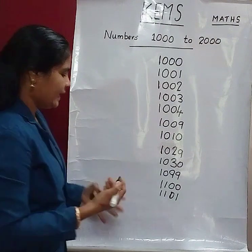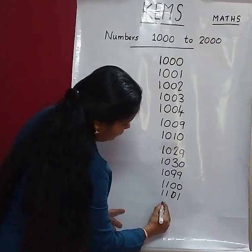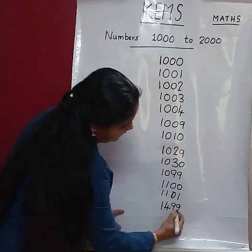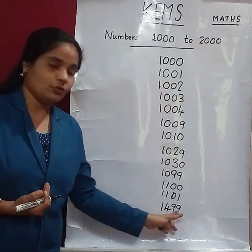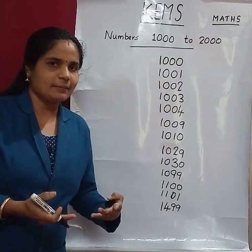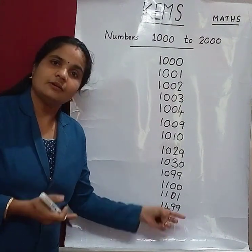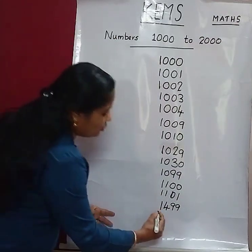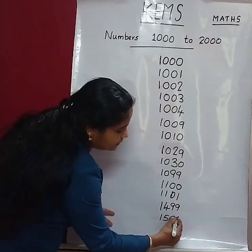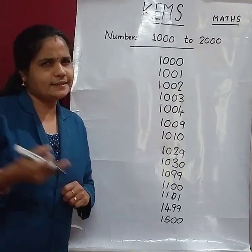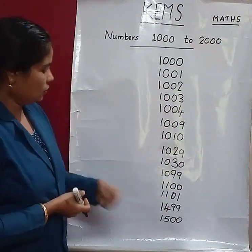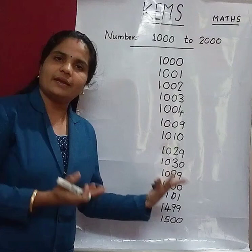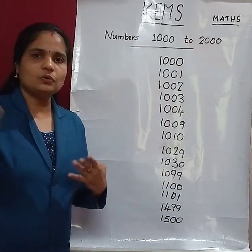So children, after 1499 comes which number? After 499 comes 500, so the next number is 1500. It's very easy to understand — just in order. Clear? So 1500, 1501, 1502, and so on.